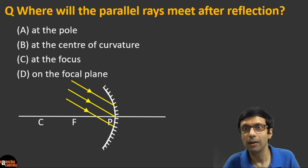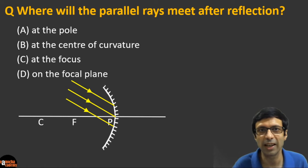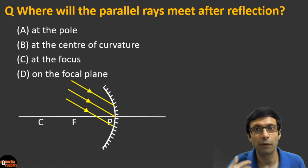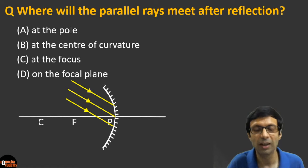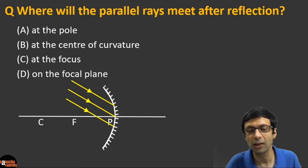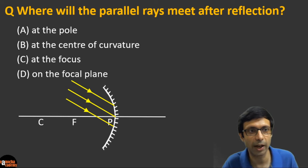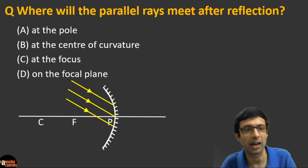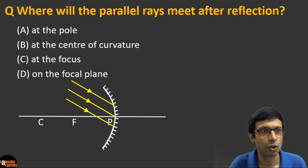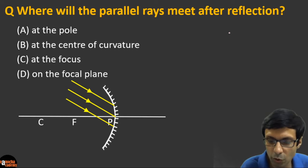Next question: where will parallel rays in the diagram meet after reflection — (a) at the pole, (b) at the center of curvature, (c) at the focus, or (d) on the focal plane? Take a careful look — this is a slightly tricky question.